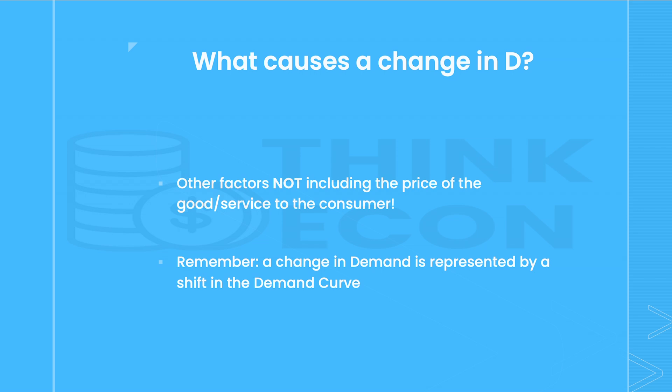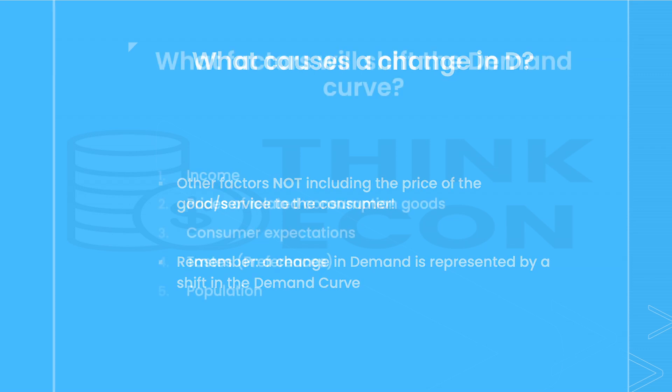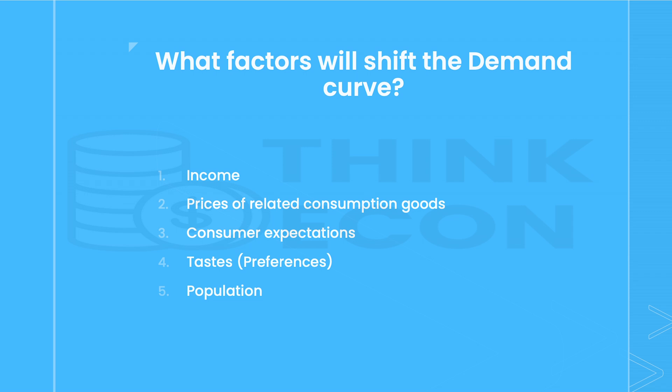We've summarized all of these shift factors down to a list of five: income, prices of related consumption goods, consumer expectations, tastes or preferences, and population. Now let's explain what each of these shift factors mean and provide a few examples.